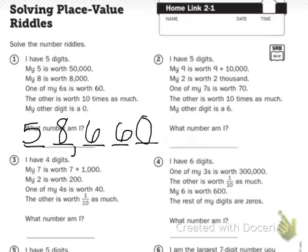I will read number two, but you will have to do it on your own. I have five digits. My nine is worth nine times 10,000. My two is worth 2,000. One of my sevens is worth 70. The other is worth ten times as much. My other digit is six. What number am I?